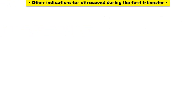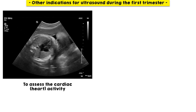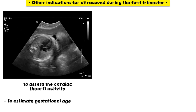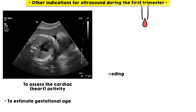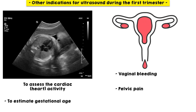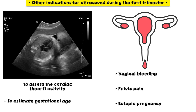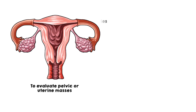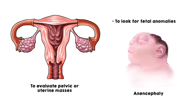In addition to that, other indications for ultrasound during the first trimester include the following: to assess the cardiac activity of the fetus and to estimate the gestational age; vaginal bleeding, pelvic pain, or any concern of an ectopic pregnancy; to evaluate pelvic or uterine masses; and to look for certain fetal anomalies in high-risk patients, including anencephaly.